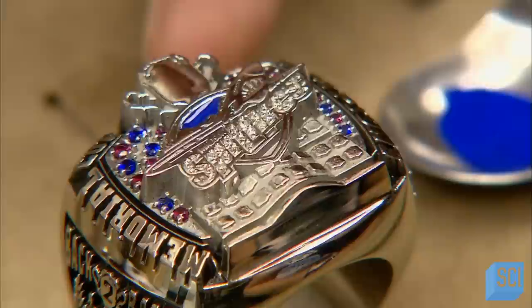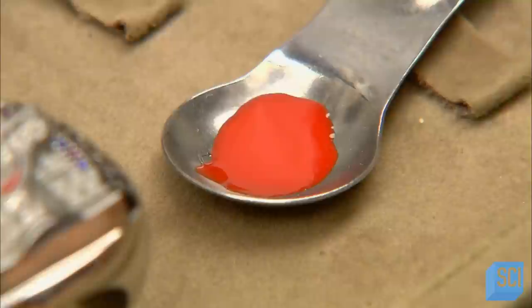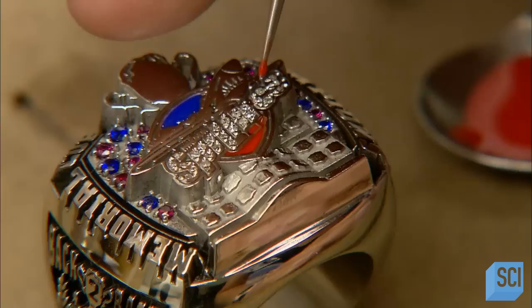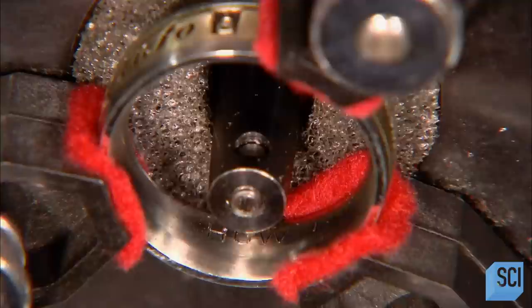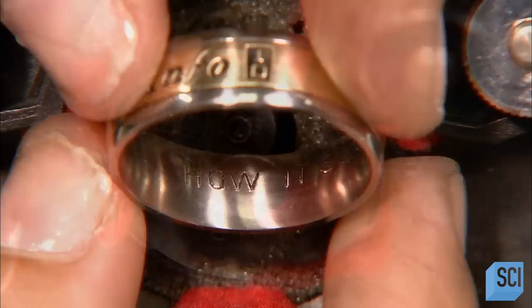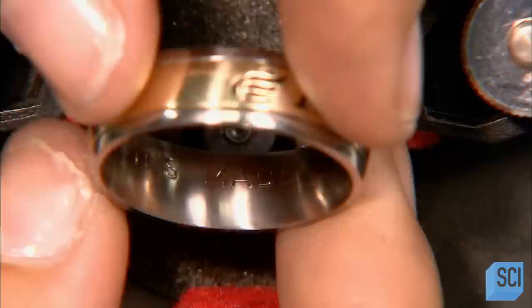Certain rings also have enamel decoration. Enamel is liquid glass. It goes on like paint, then has to be baked in an oven for 30 minutes. Finally, a computer-guided engraving machine inscribes any name or personal message customers request be written on or inside their rings.